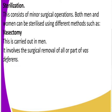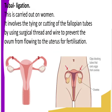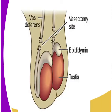We have vasectomy, which is carried out in men. It involves the surgical removal of part of the vas deferens. You can clearly see in the diagram that the vas deferens - those tubes that allow sperm to move from the testes up to the urethra, also called the sperm duct - have been cut.